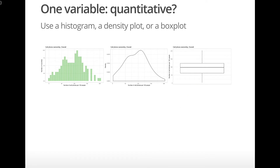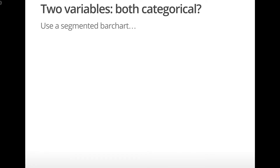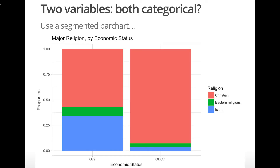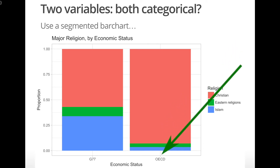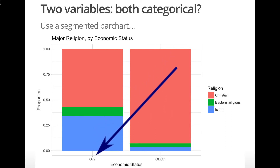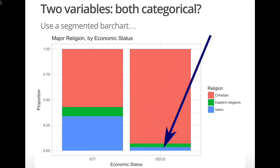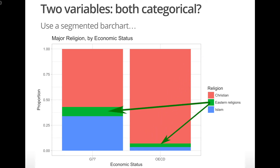Earlier, we explored the distribution of major religions across the world, but what if we wanted to look at this distribution by economic status — how do G77 countries compare with OECD countries? Now we have two variables, major religion and economic status, and both are categorical, so we can use a segmented bar chart. We see Christianity is more popular in developed OECD countries than in developing G77 countries, whereas Islam is much more popular in G77 developing countries than in OECD developed countries. Eastern religions, shown in the green bar, are the least popular major religion in both groups of countries.